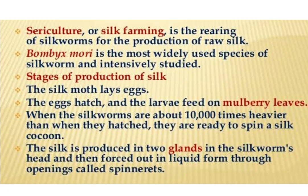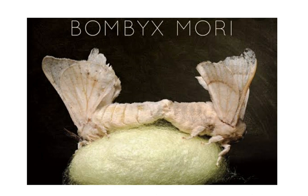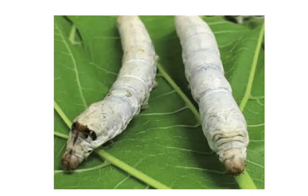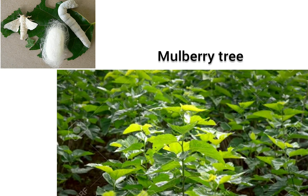Next, let us move on to sericulture. The rearing of silkworms is called sericulture. The silk moth is an insect that provides silk yarn. The silk moth is scientifically called Bombyx mori. The female moth lays eggs, and from these eggs larvae come out. The larvae are actually the silkworms, also called the caterpillar of the silk moth. Silkworms feed on mulberry leaves and they make cocoons around themselves.